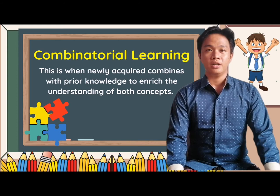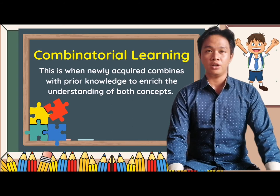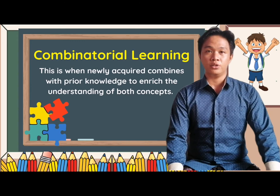Lastly, combinatorial learning. This is when newly acquired knowledge combines with prior knowledge to enrich the understanding of both concepts. This is learning by analogy — a process by which the new idea is derived from another idea that is neither higher nor lower in the hierarchy, but at the same level. Despite the fact that the Subsumption Theory deals primarily with rote learning principles, its primary goal is to create meaningful learning experiences. Meaningful learning occurs when an individual is able to create connections between what they learn and what they already know within their cognitive structures.